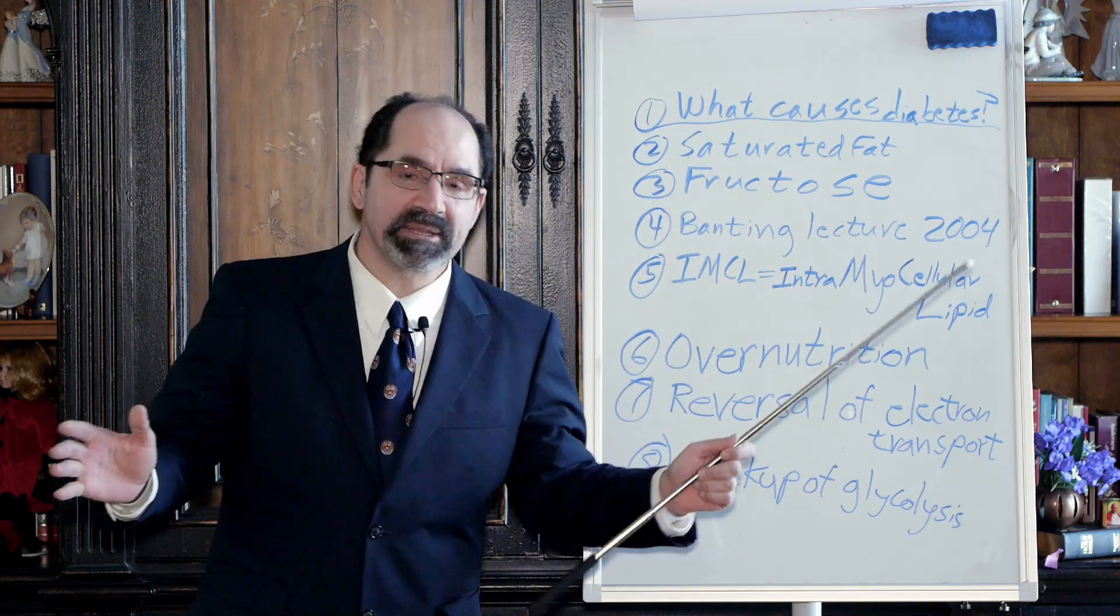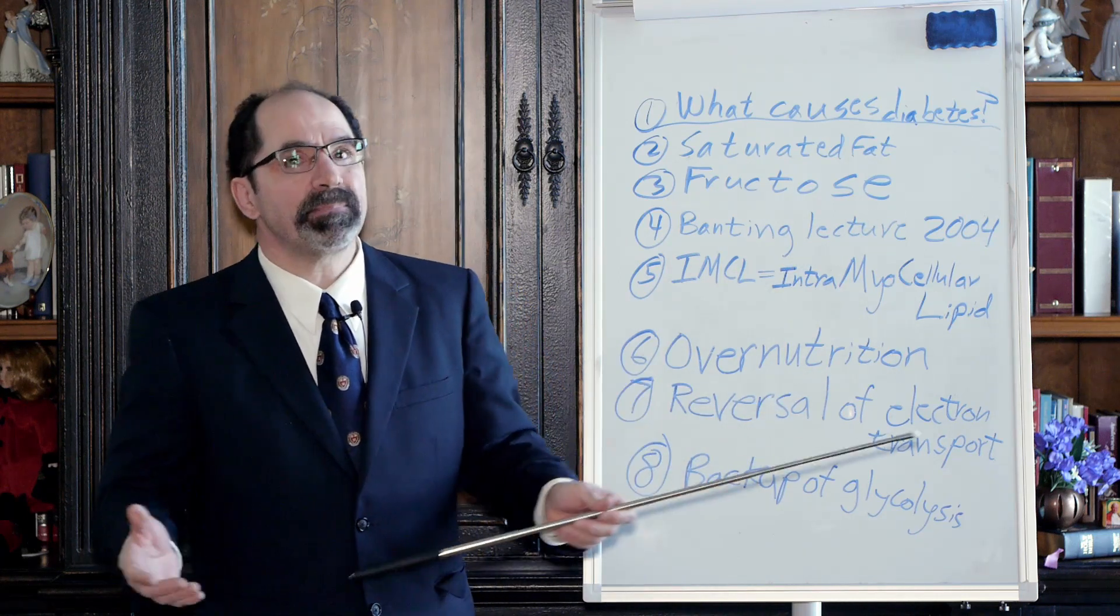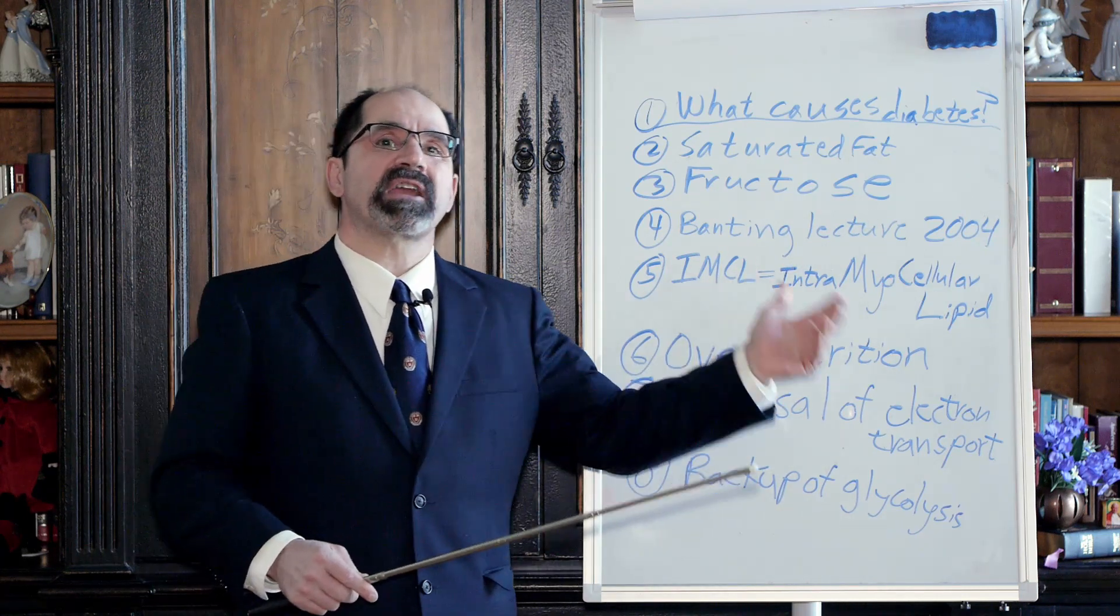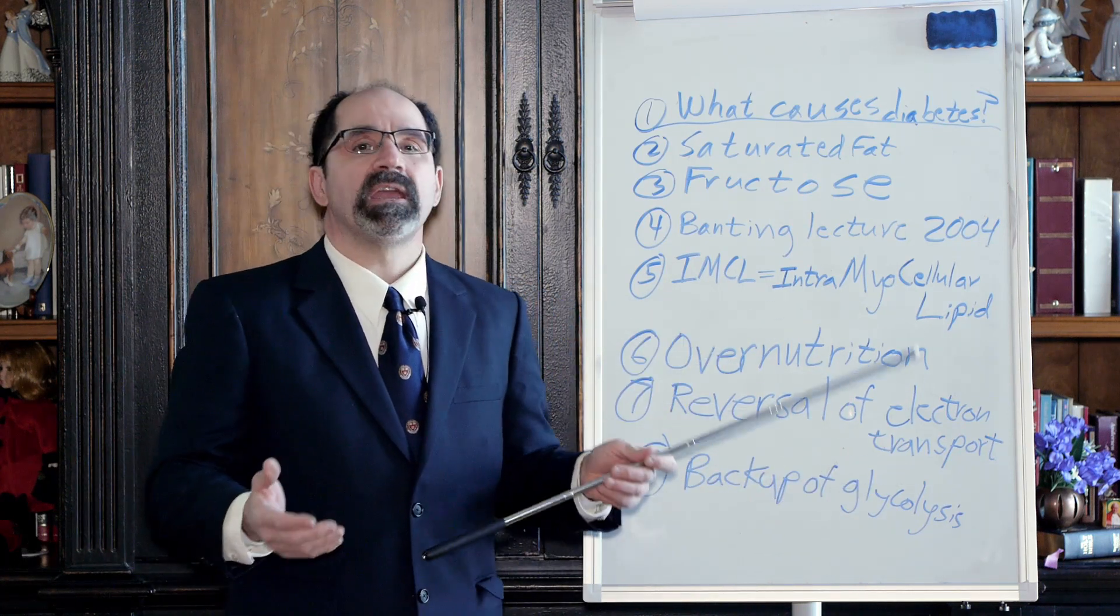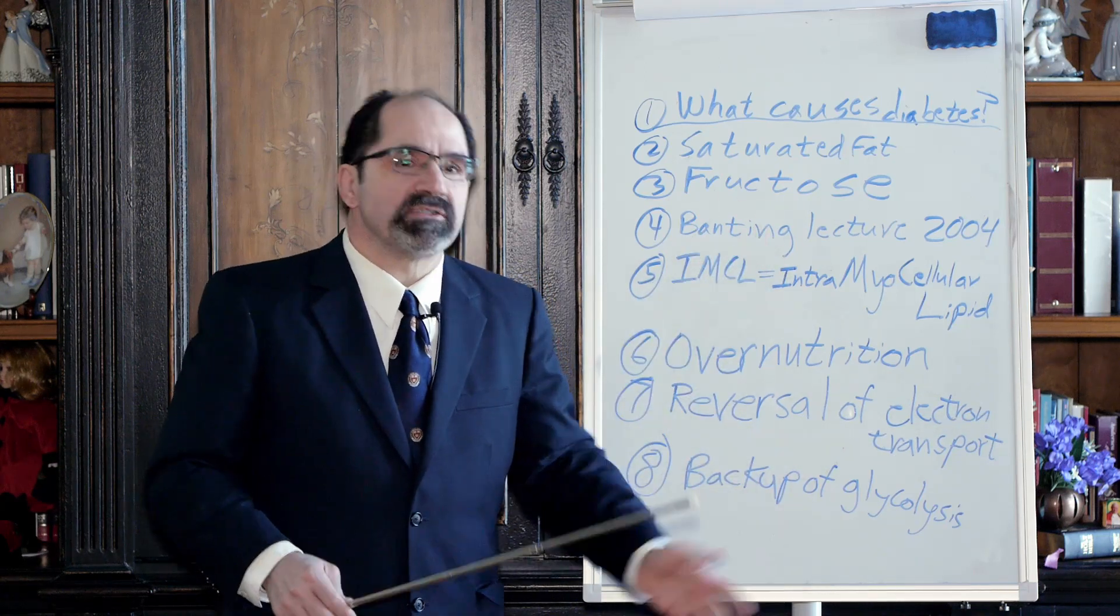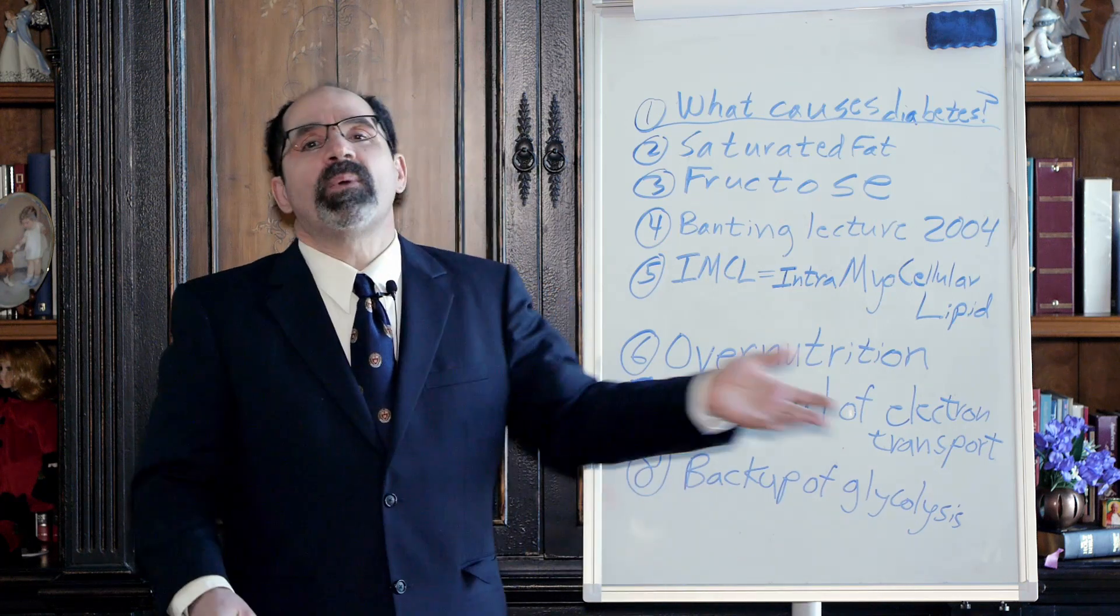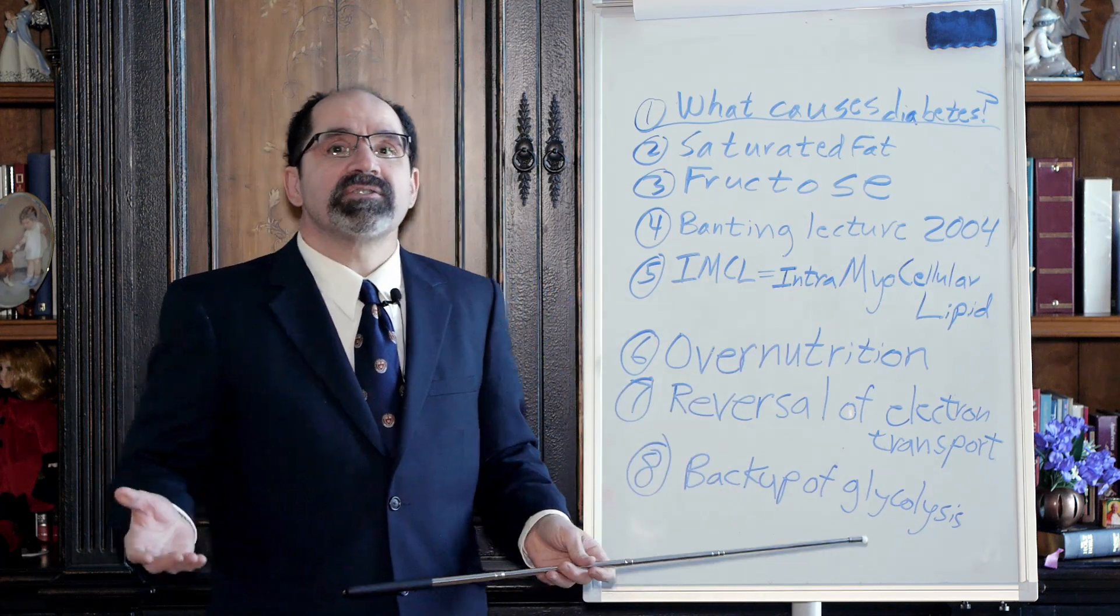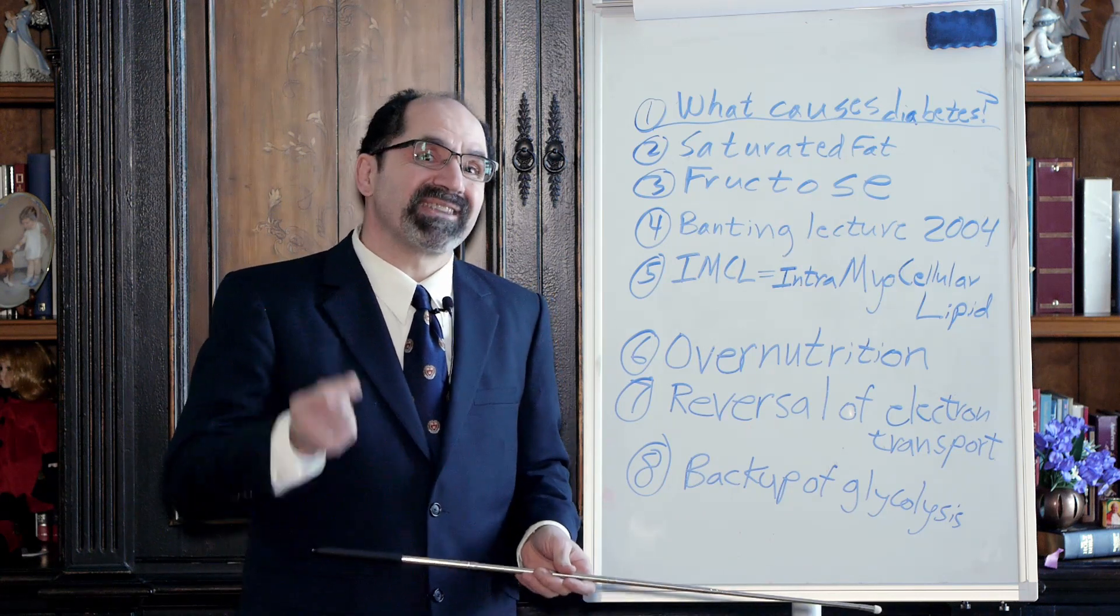Diabetes is a lipid disease. Everyone says it's a carbohydrate disease. No, it is primarily a lipid disease. Hyperglycemia is a secondary effect of ingesting large amounts of lipid. That's an important point. If you ever want to cure a disease, you have to remove what causes the disease. And in order to remove what causes or avoid what causes a disease, you have to know what causes a disease. And what causes diabetes is eating excessive amounts of saturated fat. That's the key thing.